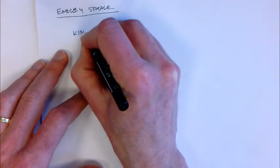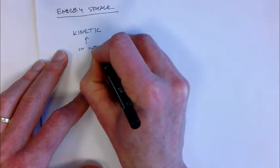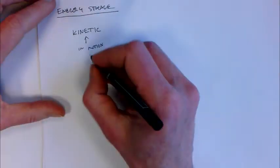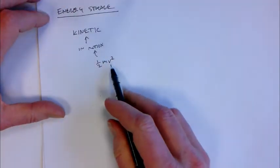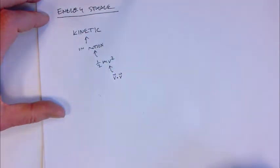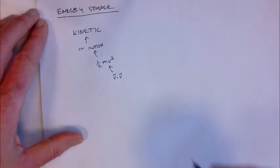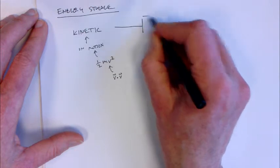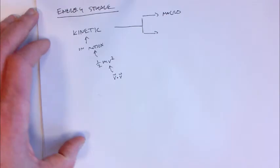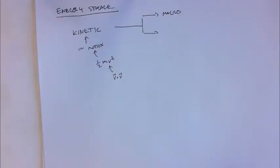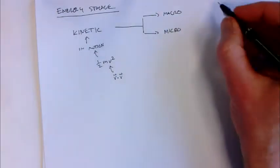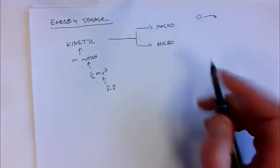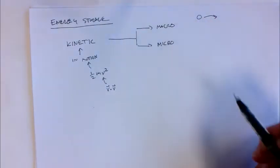One high-level way you can store energy is in motion. When a particle is moving, it has kinetic energy. The kinetic energy of a moving particle is one-half the mass times the velocity squared — where velocity squared is simply the dot product of the velocity with itself. You can think about kinetic energy at two levels. At the macro level, we imagine large chunks of matter moving around at a large scale — for example, a ball flying through the air has kinetic energy equal to one-half its mass times its velocity squared.